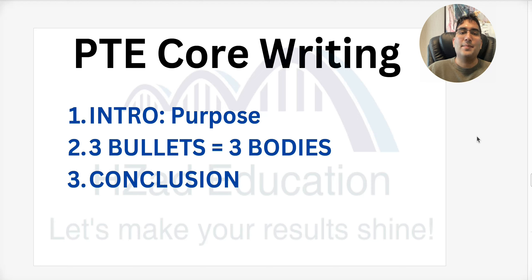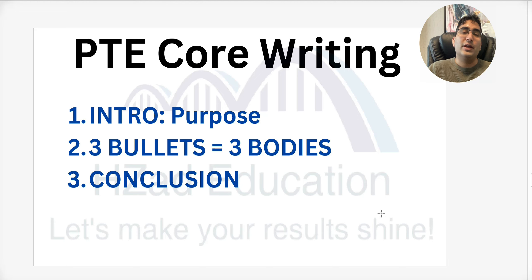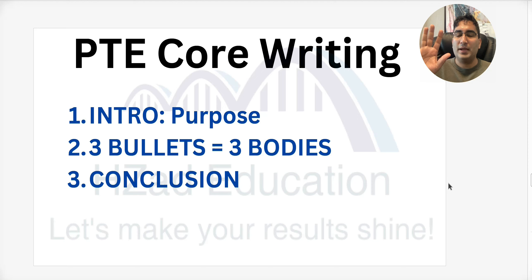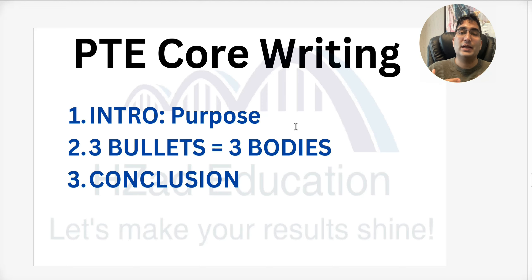PTE Core Writing is marked by an AI. When you get your Task 2 question — which is the email — you have a situation followed by three bullet points. You need to keep the structure very simple and neat for the AI to understand that you have addressed everything. The structure is right there in front of you: it's supposed to be five paragraphs. The first paragraph is your purpose — the reason you are writing — and it starts with something like 'I'm writing this letter because' or 'The purpose of my writing is.'